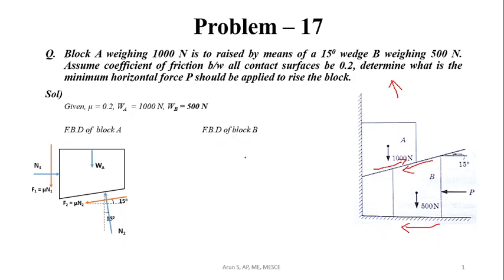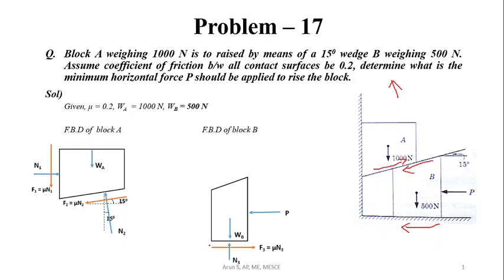We will now draw the free body diagram of wedge B. The weight W_B acts vertically downwards at its center of gravity. The external applied force P acts horizontally. The normal reaction from the ground on wedge B is N3, acting perpendicular to the ground surface in the upward direction. As the wedge moves to the left, friction force F3 acts in the opposite direction, where F3 equals mu times N3.